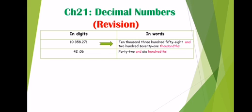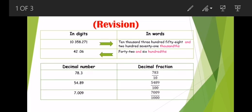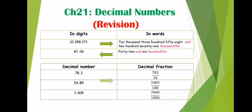Now we have to write 'forty two and six hundredths' in digits. 'And' means point, so before the point we write forty two, we put a point, and we write zero six — because we have no tenths digit it means zero, and we have six hundredths. So the answer is forty two point zero six.